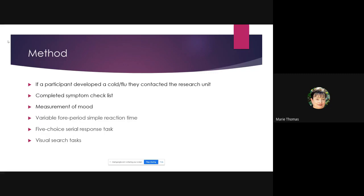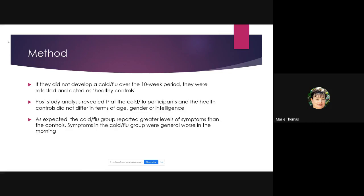If a participant developed a cold, they contacted the research unit and completed a cold and flu symptom checklist, then completed the mood, SRT, serial response task, and visual search tasks. If they did not develop a cold over the 10-week period, they were retested and acted as healthy controls.